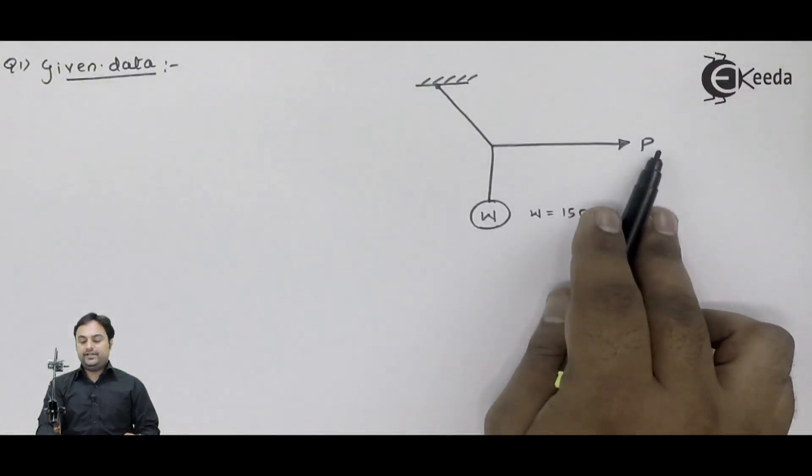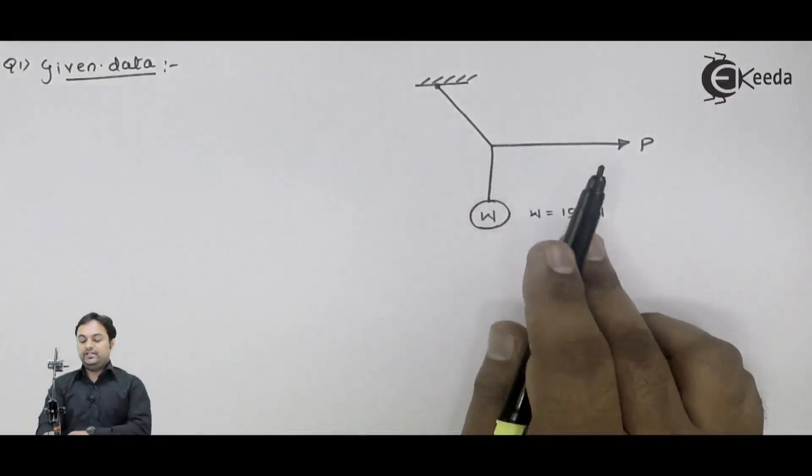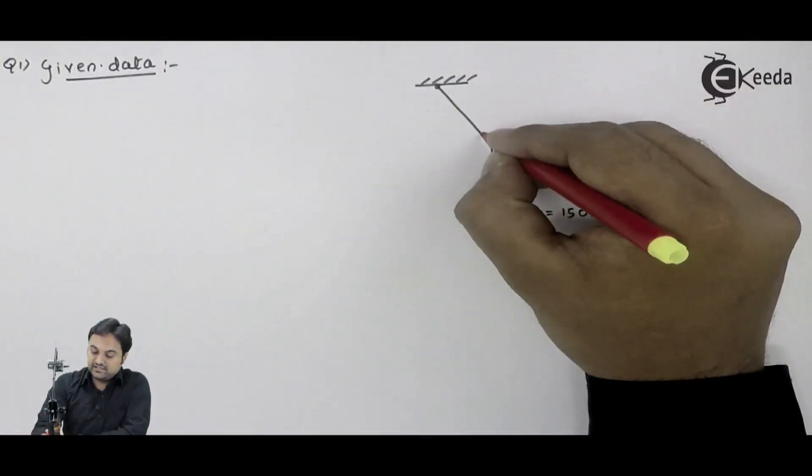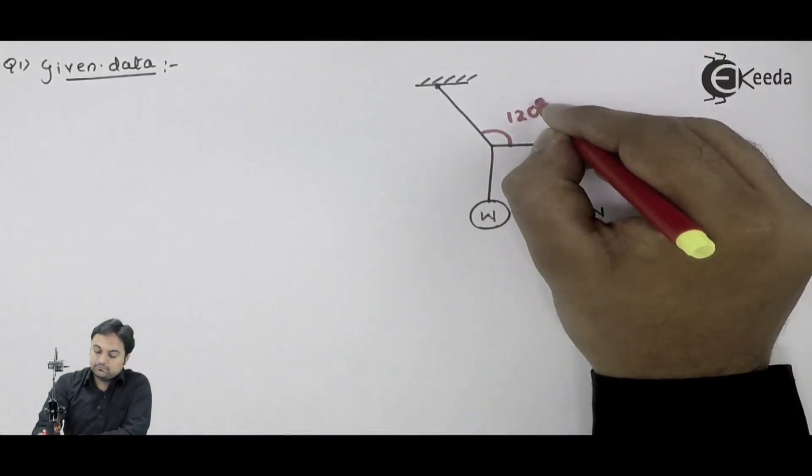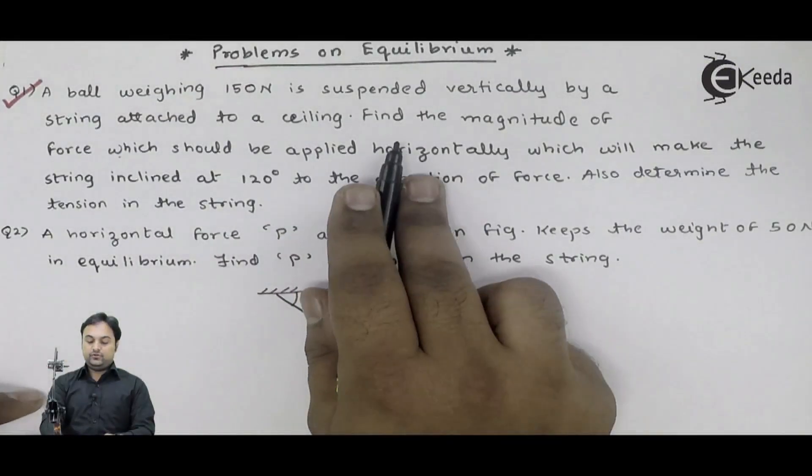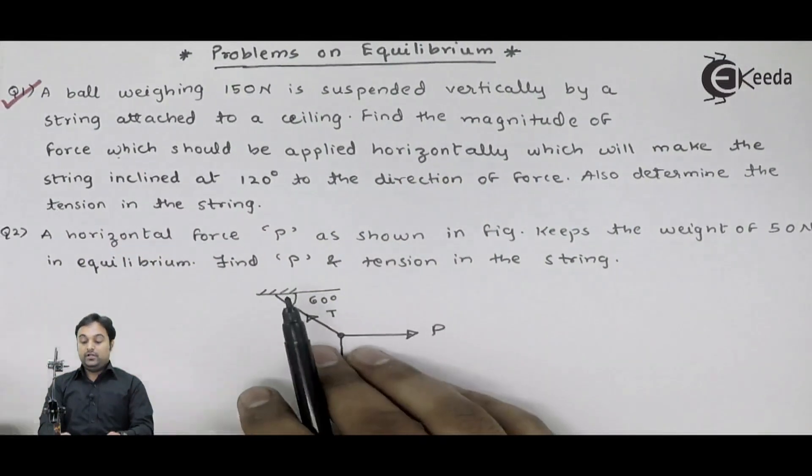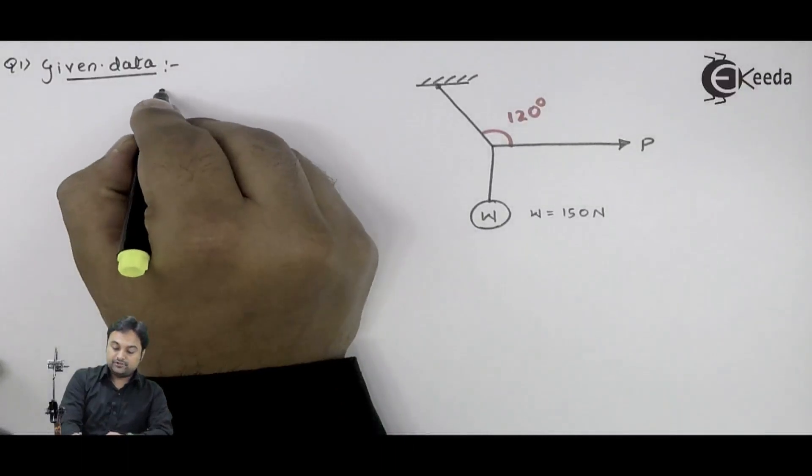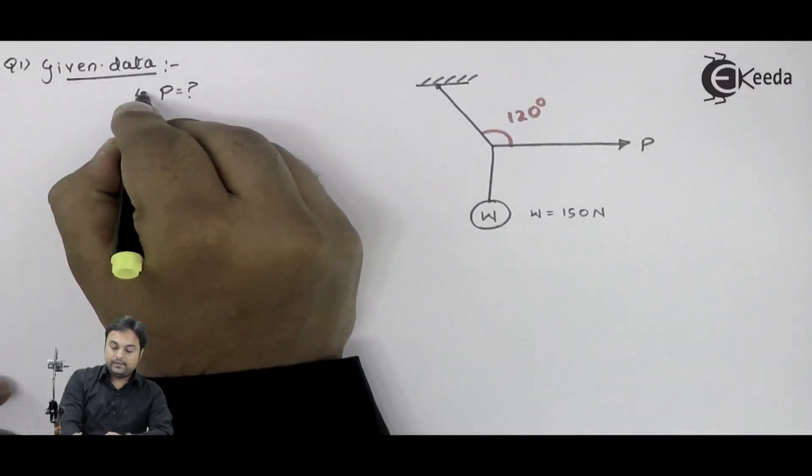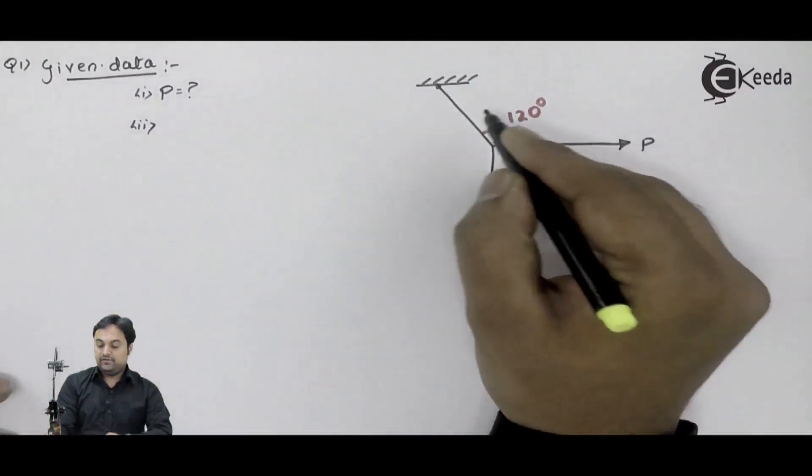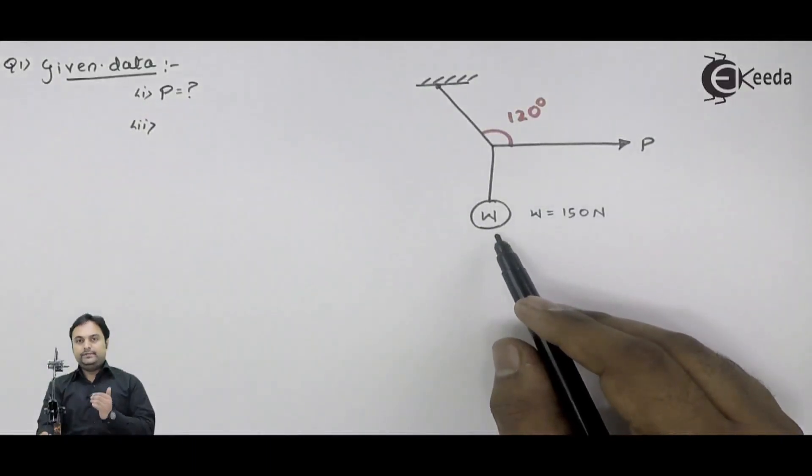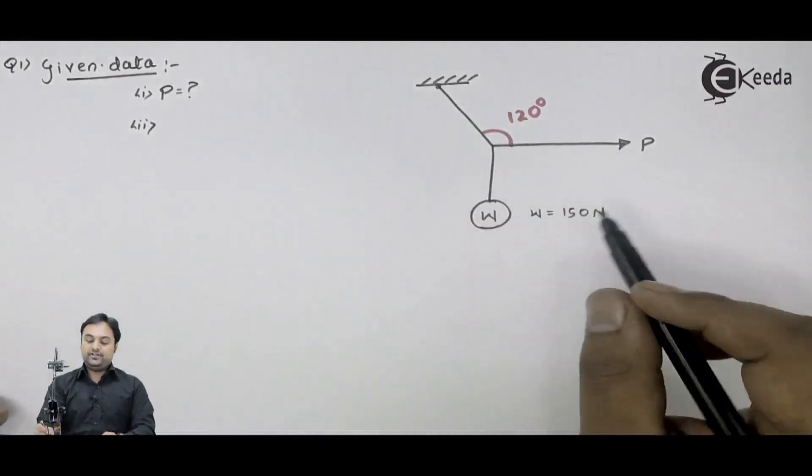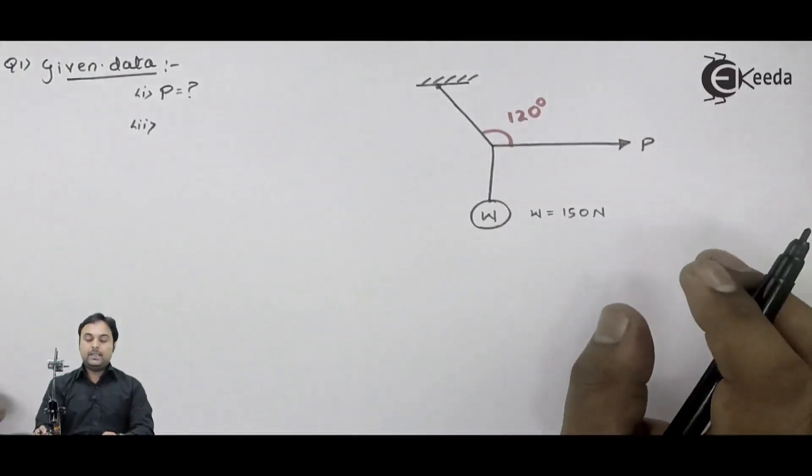Here we are applying horizontal force to the string which is making 120 degree with the horizontal. Means the string is inclined at 120 degree to the horizontal. Also determine the tension in the string. Means we have to calculate the value of the first question and the second question. Here we have to calculate the tension in this string and effort P. Load is applied, because of the load there will be tension. At the same time we are pulling this string, so because of that also there will be tension.